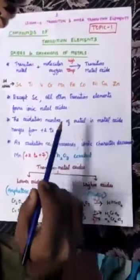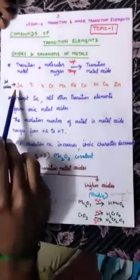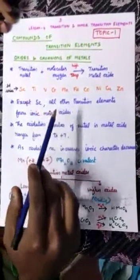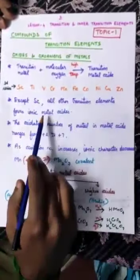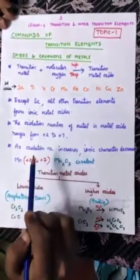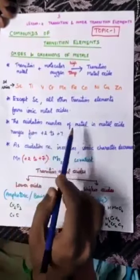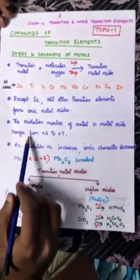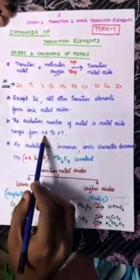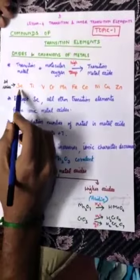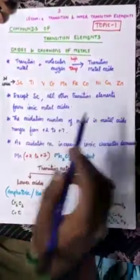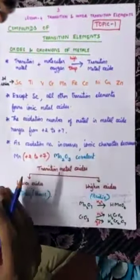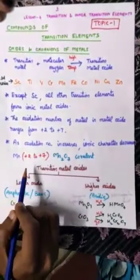When these elements react with oxygen they form metal oxides. The oxidation number of the metal in metal oxide ranges from plus 2 to plus 7. For Scandium it will be plus 3. For the remaining elements, the oxidation number increases from plus 2 to plus 7.